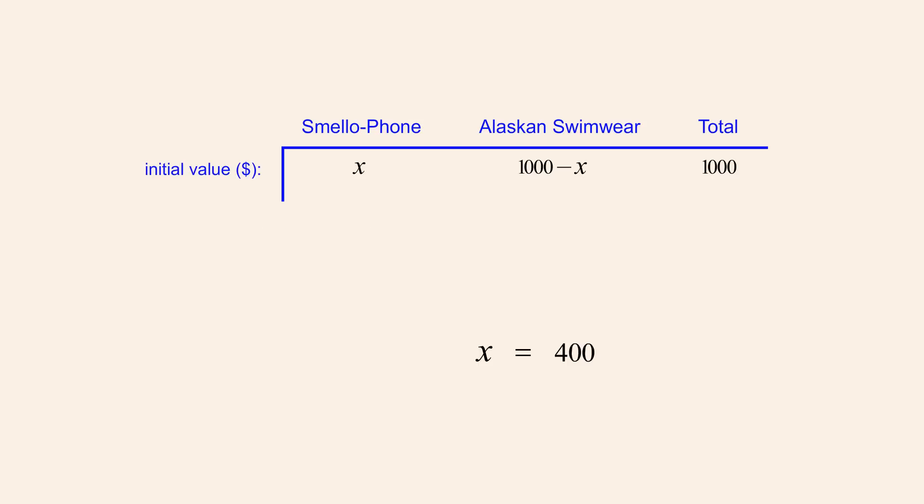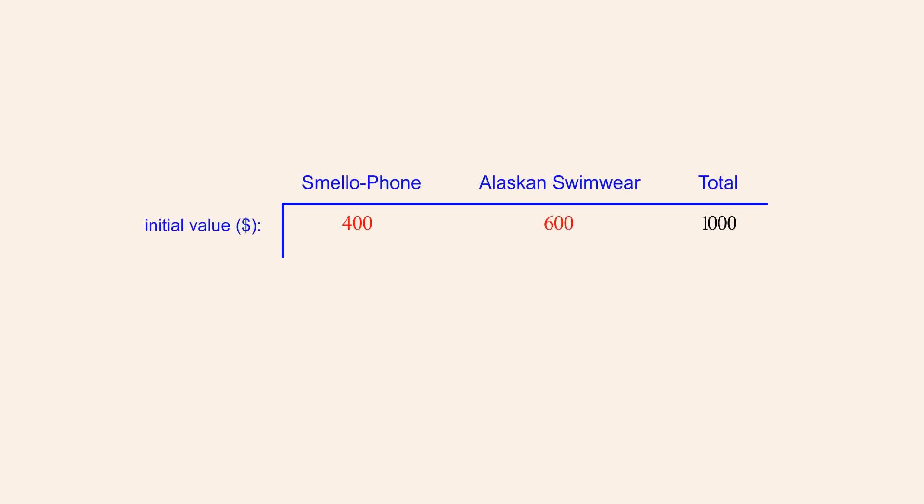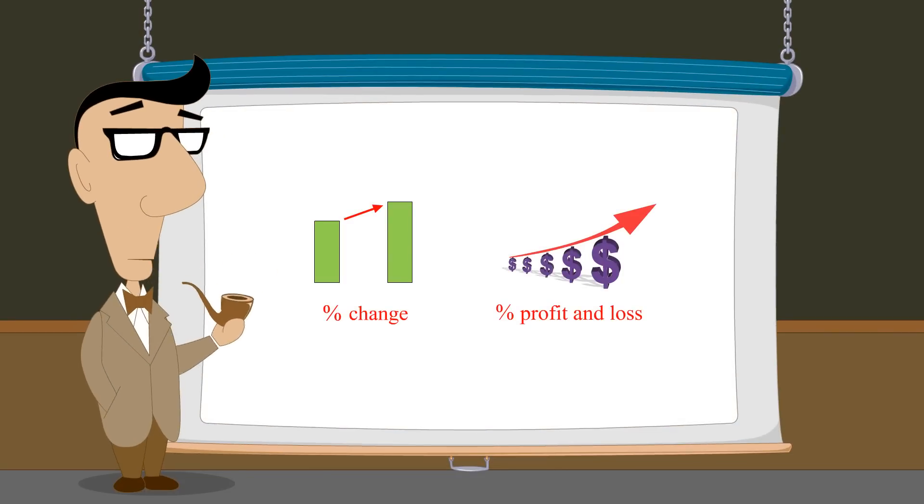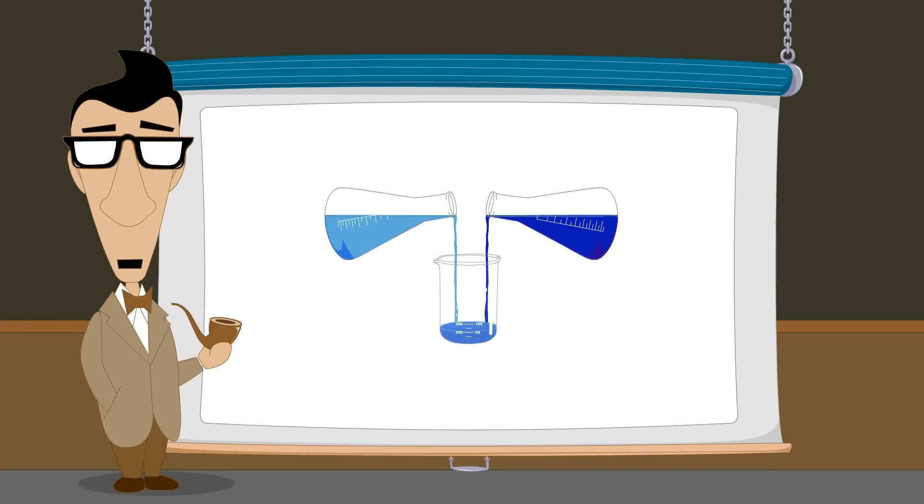Now we can substitute this value for x into the expressions in our table to find the size of each initial investment. We see that Adrian's initial Smellophone investment was 400 dollars and her initial investment in Alaskan Swimwear was 1000 minus 400, or 600 dollars. So far, we have seen how algebra can be used to solve various types of percentage problems including percentage change and profit and loss. In the next lecture, we will see how to solve problems involving mixtures of solutions of different concentrations.